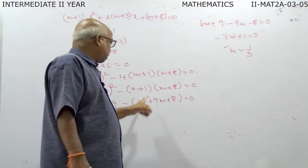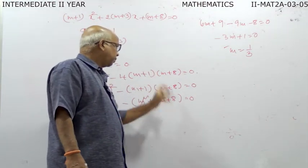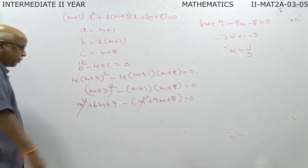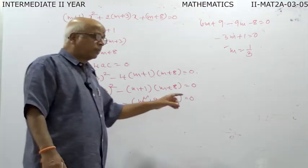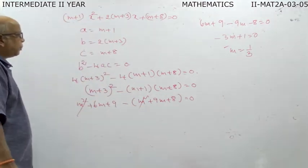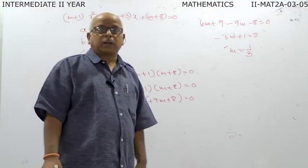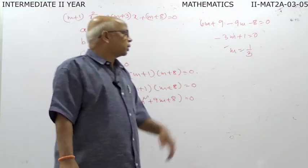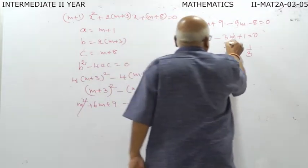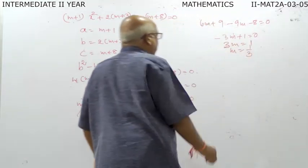Expanding m plus 1 into m plus 8: m times m is m-squared, 8m plus m is 9m, 1 times 8 is 8. The m-squared terms cancel. 6m minus 9m gives minus 3m, and 9 minus 8 is 1, so minus 3m plus 1 equal to zero, giving 3m equal to 1, so m equal to 1 by 3.